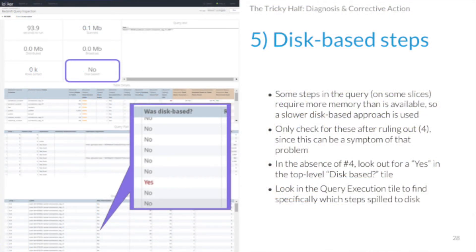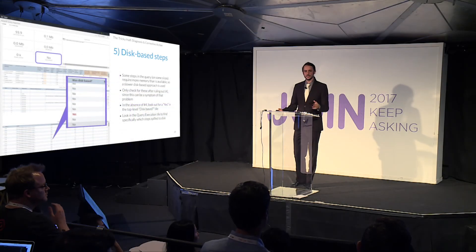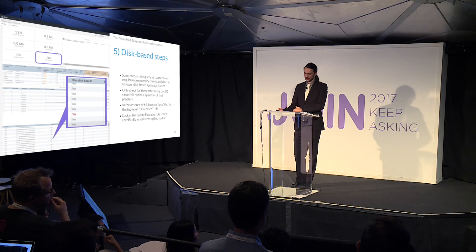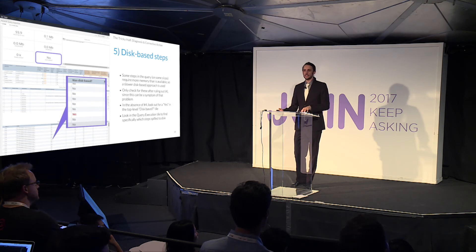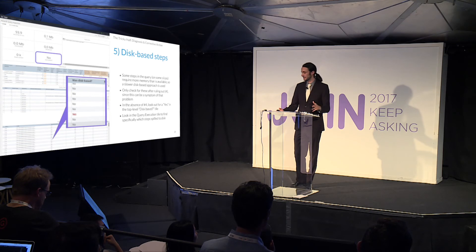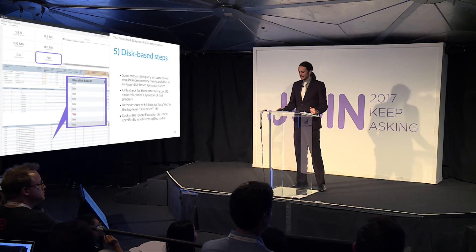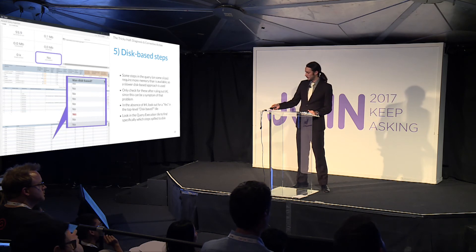The last issue is disk-based steps. I put this one last because a lot of times it's more of a symptom than a cause — make sure you've eliminated issues like number four on join cardinality before looking at this. It will be flagged clearly at the top of the query inspection dashboard with a 'yes' in red, and you can look at the query execution report to find the exact step that had the disk-based issue. What it means is that for at least one node and one step, that node did not have enough memory to perform the required operation, so it switched to a slower disk-based algorithm.